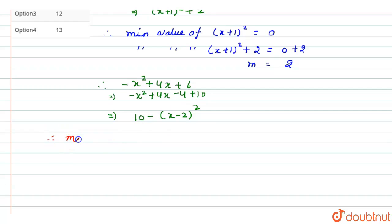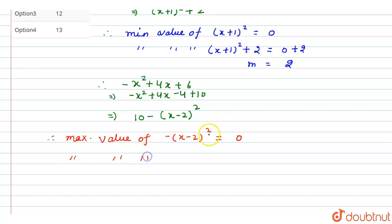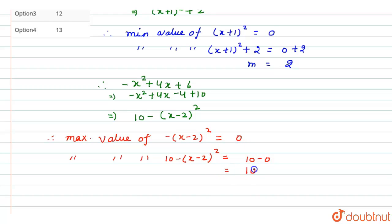Now we have to find the maximum value. The maximum value occurs when (x minus 2) whole squared equals 0. So the expression 10 minus (x minus 2) whole squared equals 10 minus 0, which gives us 10. This is the maximum value, capital M equals 10.